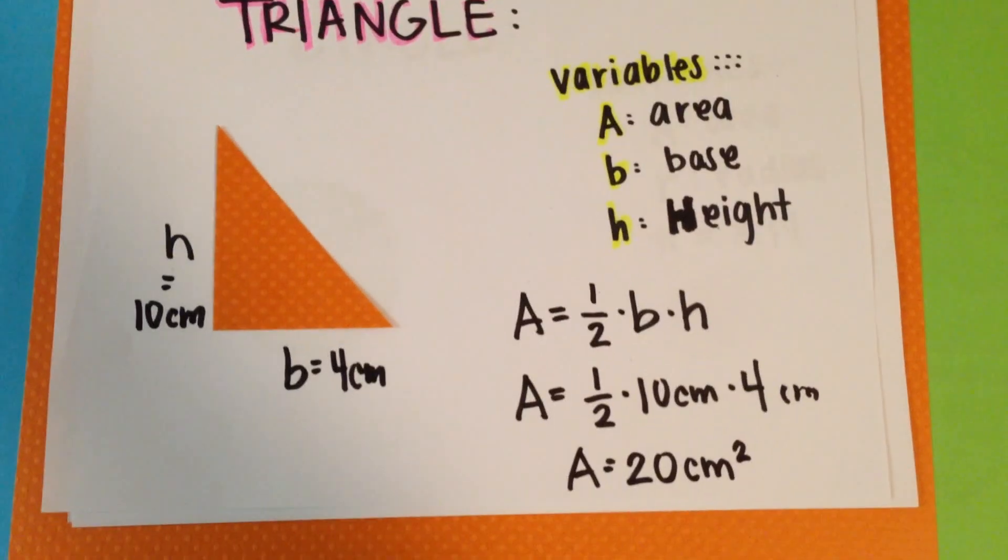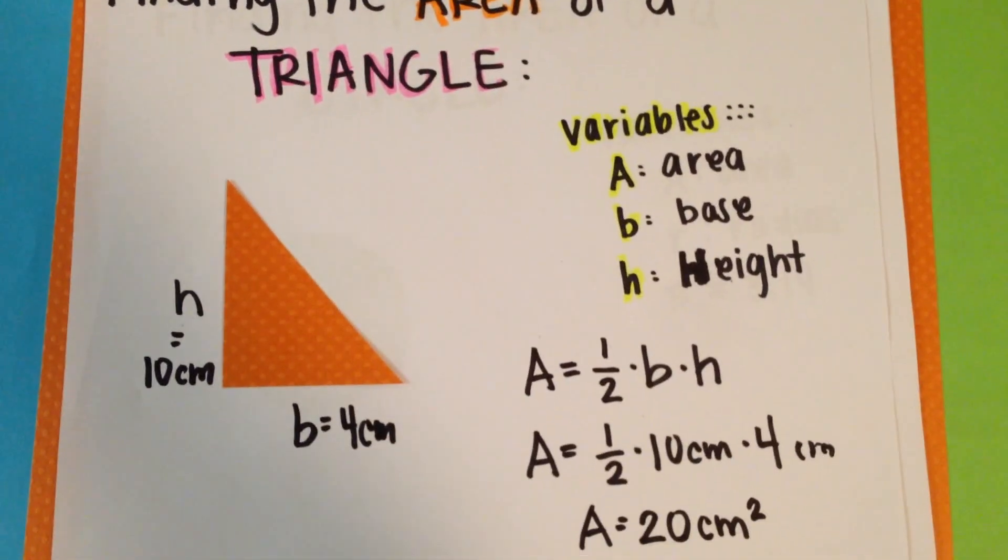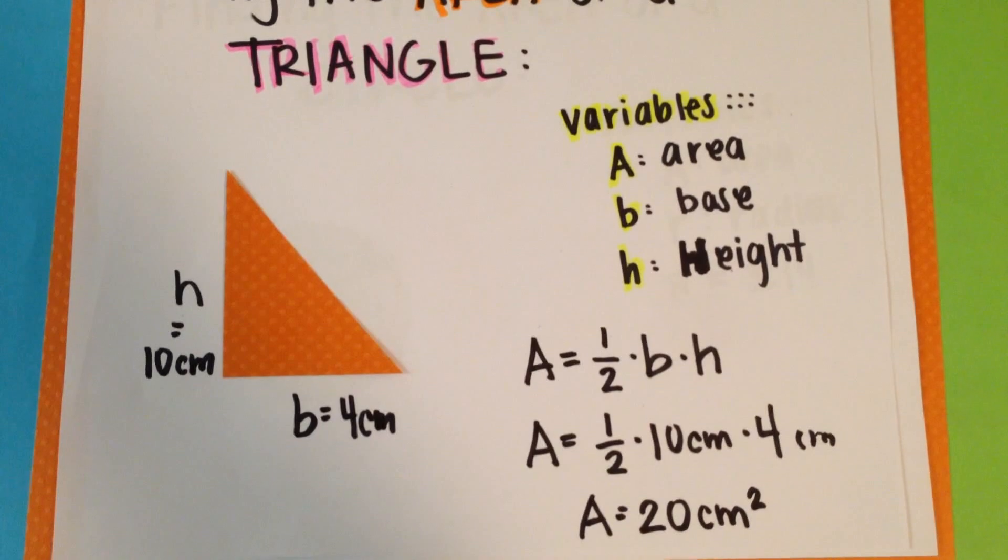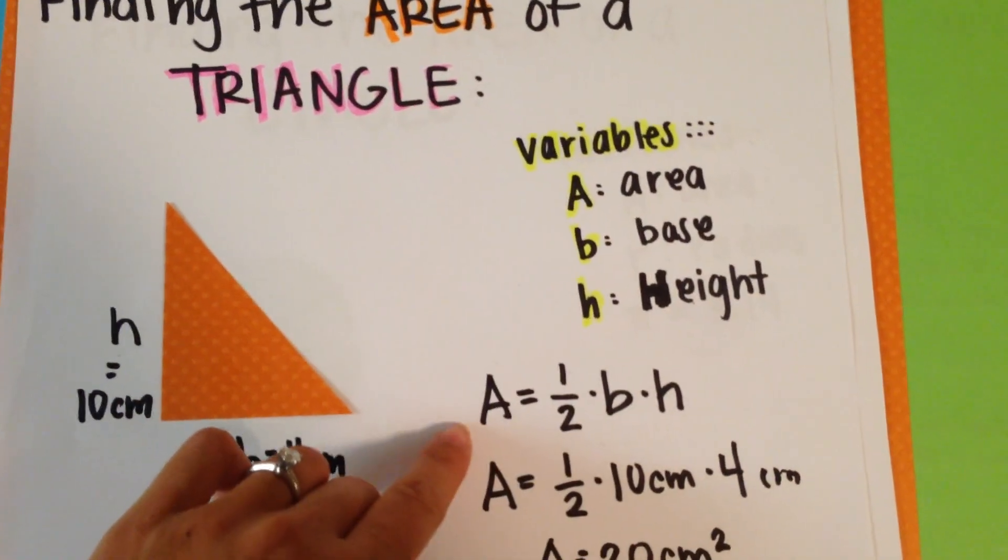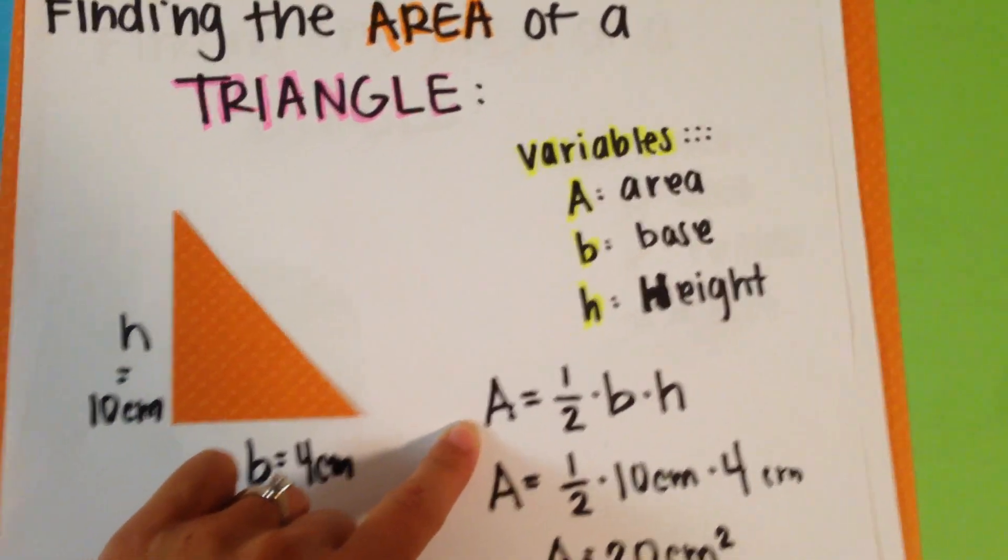Now take a moment to use your own triangle. Distinguish a height and a base, and find the area using the equation A equals 1 half base times height.